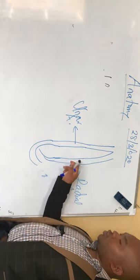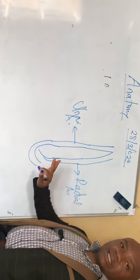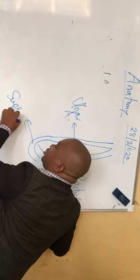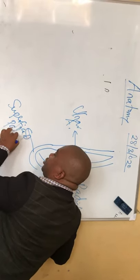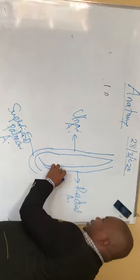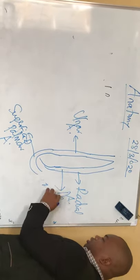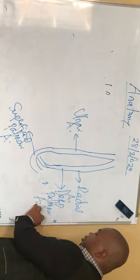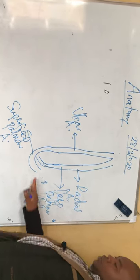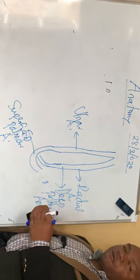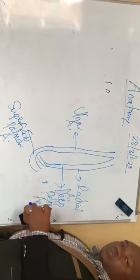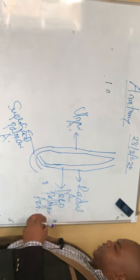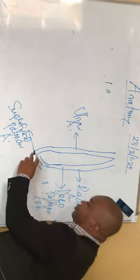Going into the wrist to form a palmar arch: the ulnar artery will form what is called the superficial palmar arch, while the radial artery will form what is called the deep palmar arch. These two arches will form branches that supply the digits one, two, three, four, and five.